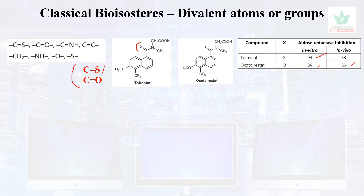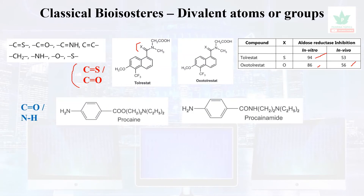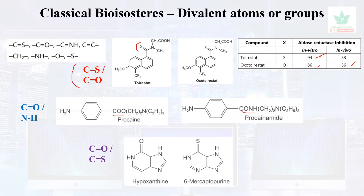Next is the C=O interchange with NH. Procaine, when the functional group C=O is interchanged with C(O)NH, gives rise to Procainamide, an anti-arrhythmic compound, whereas Procaine itself is a local anesthetic. Other examples include the interchange of C=O and C=S.